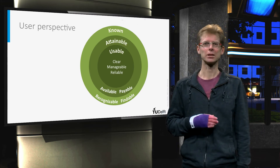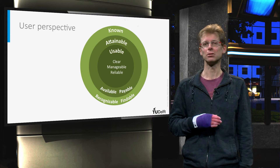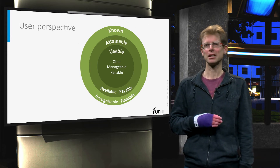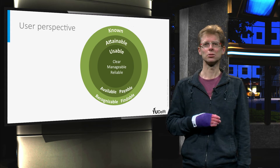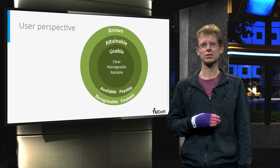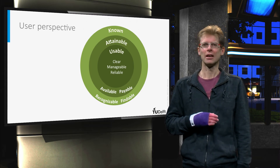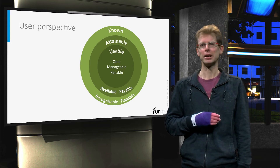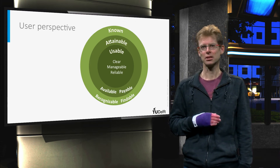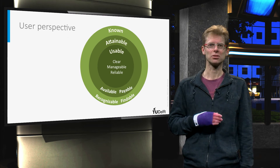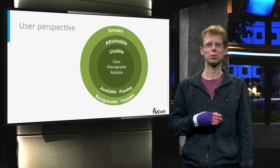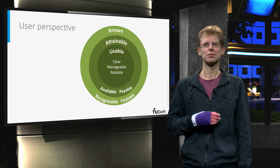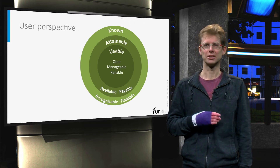In the first circle, by requiring the publication of the data on the internet. In the middle circle, by maximizing the price of the data, setting the use restrictions, and requiring access through certain services. And finally, in the innermost circle, by requiring metadata documentation, harmonized data specifications, and the publication in certain formats. The law therefore has a major role to play in open government data.